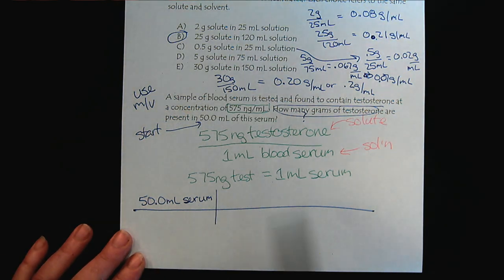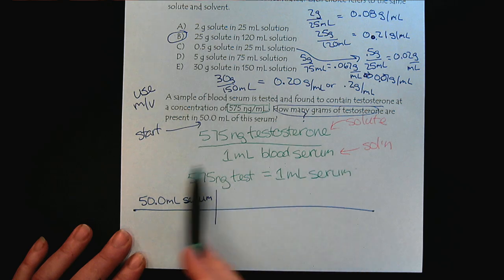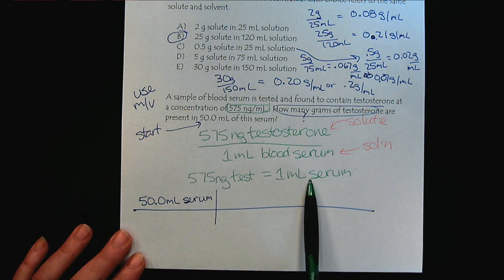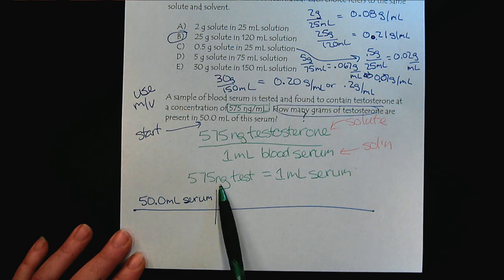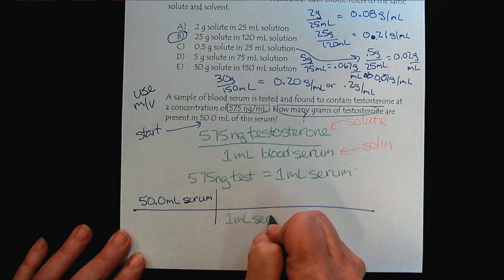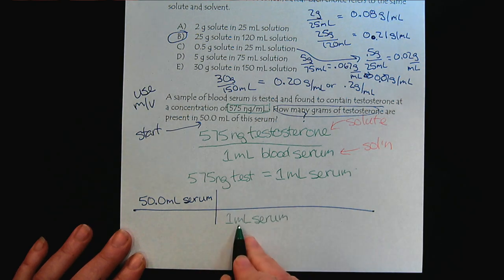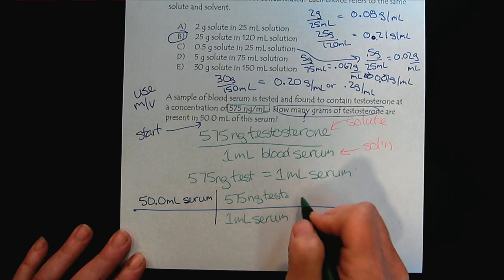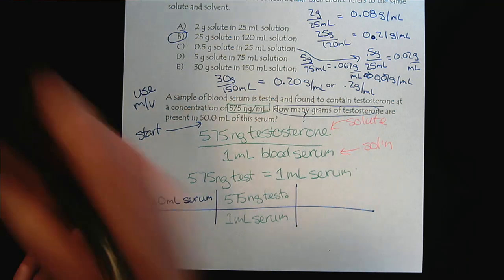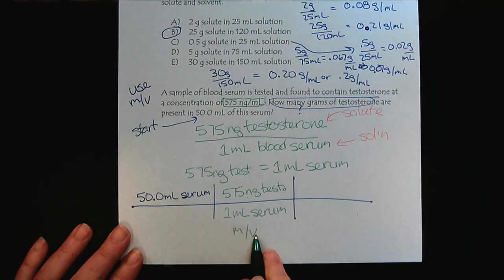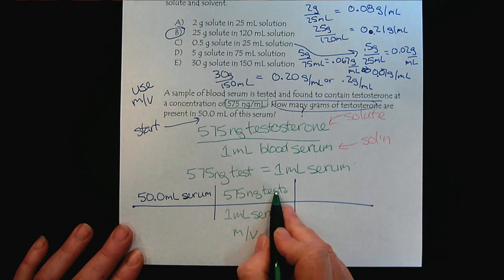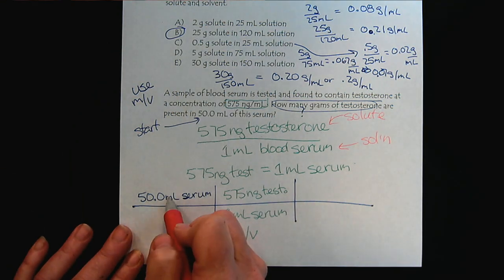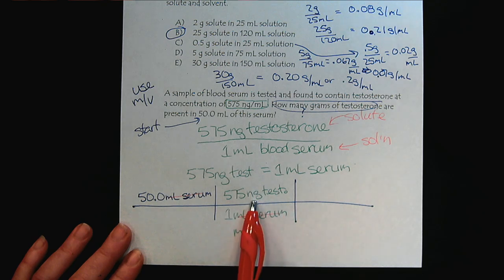We want to get to grams of testosterone, so this concentration is the bridge. It connects the serum, the volume of the serum, to the mass of the solute, the testosterone. We have milliliters of serum on the top, we're going to have milliliters of serum on the bottom so that they cancel out. And we know that every milliliter of serum has 575 nanograms of testosterone. We've used our mass over volume concentration to convert out of serum and into testosterone. We can cancel out the milliliters of serum, they're gone. Now we have nanograms of testosterone.